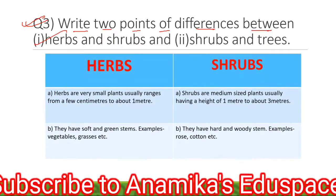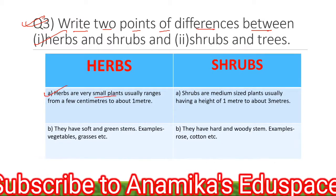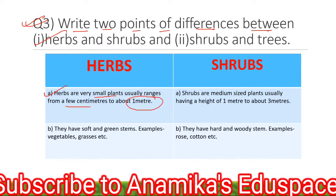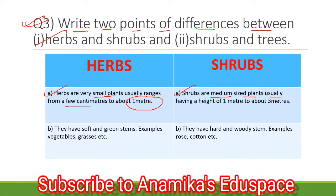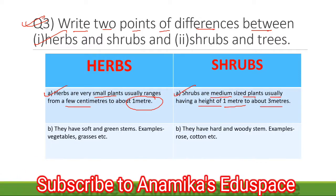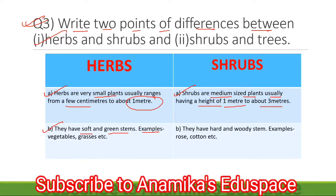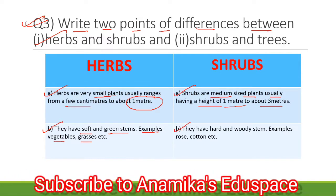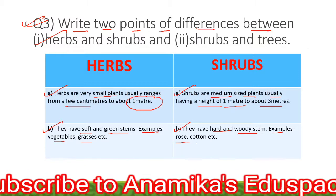Herbs versus shrubs. Herbs are very small plants, usually ranging from a few centimetres to about 1 metre. They have soft and green stems. Examples: vegetables, grasses, etc. Shrubs are medium-size plants, usually having a height of 1 metre to about 3 metres. They have hard and woody stems. Examples: rose, cotton, etc.